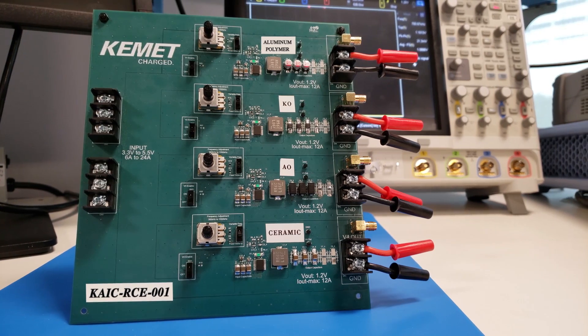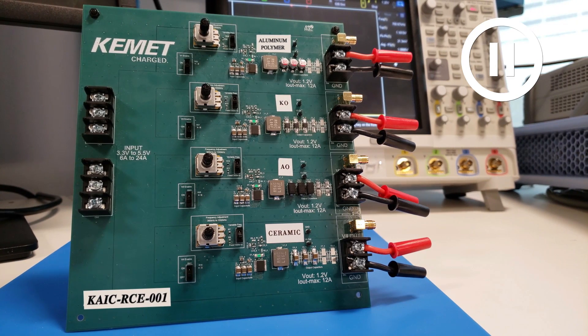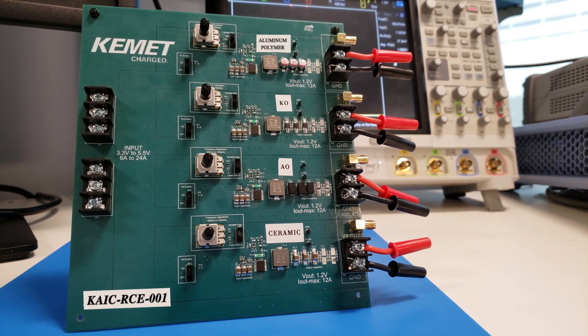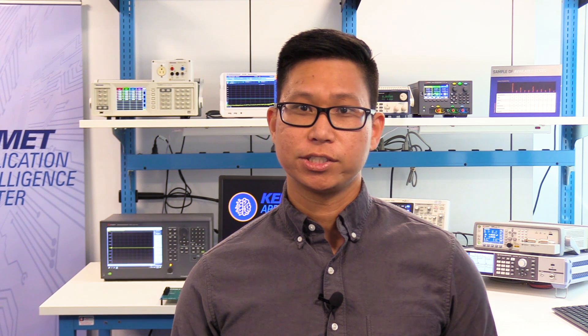So I created the KAIC RCE001. That sounded a lot better in my head. The RCE stands for Ripple Current Evaluation. But why did I name the board Ripple Current Evaluation? I thought we're looking at ripple voltage. Ripple Current is the pulsating current output you see from a switching regulator. The ripple current going through the ESR of a capacitor creates fluctuations in the voltage, which we call Ripple Voltage.